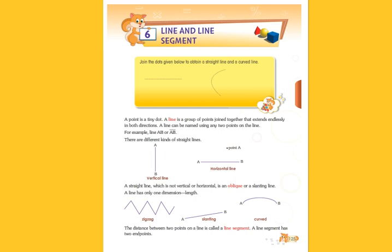A straight line which is not vertical or horizontal is an oblique or a slanting line, which is not horizontal or vertical. That is known as the slanting line. A line has only one dimension, that is length. The lines are just one dimension, length.